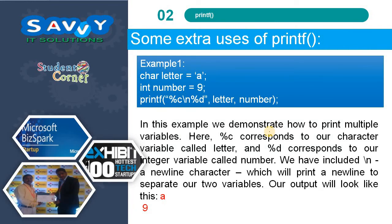Some extra uses of printf: reading character letter as 'a' and number as 9, then printing with %c letter and %d number separated by \n — it prints each on a new line. In this example, we demonstrate how to print multiple variables. %c corresponds to the character variable letter and %d corresponds to the integer variable number. A \n new line character separates them. The output will look like: a and 9.